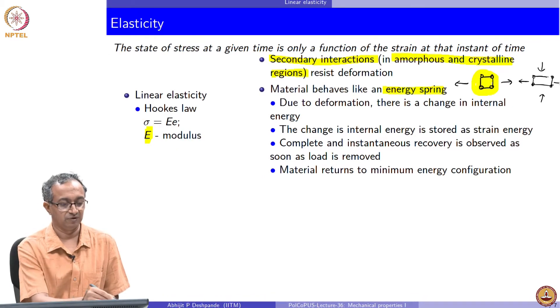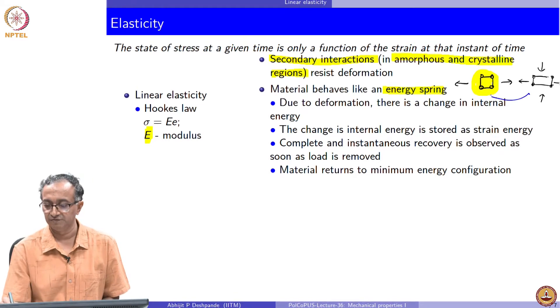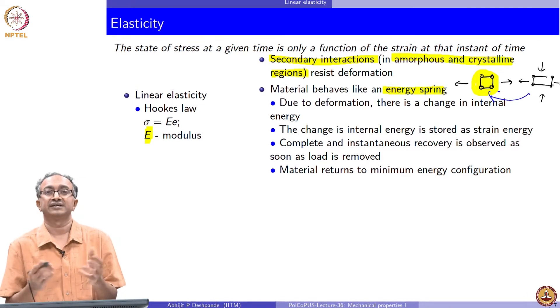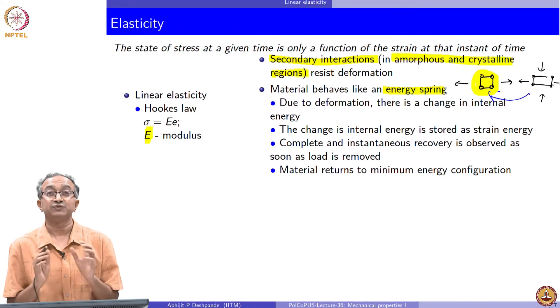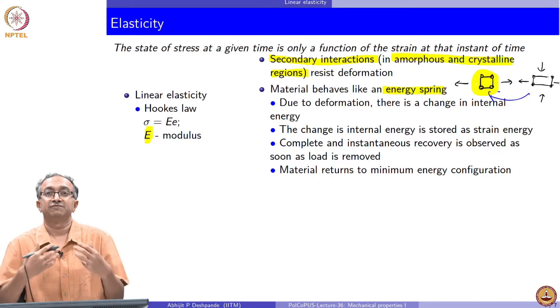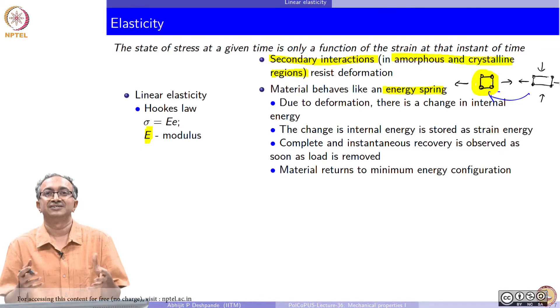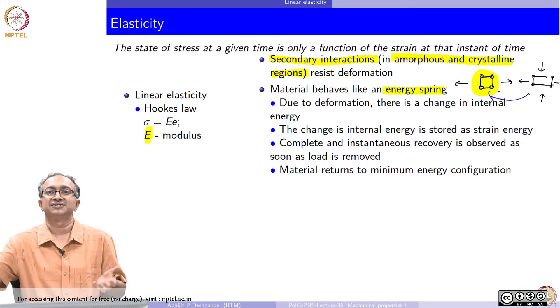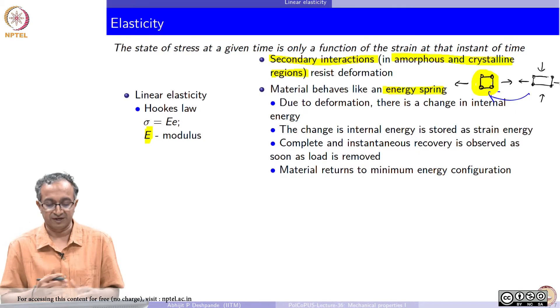The minimum energy configuration is always reached. Therefore, sample will always come back from the deformed state to undeformed state in exactly identical way. That is why the current state of strain is only important. Whatever is the deformation that is applied in the material gets stored in the material as strain energy. When we release it, the strain energy is released back, material comes back to original state.